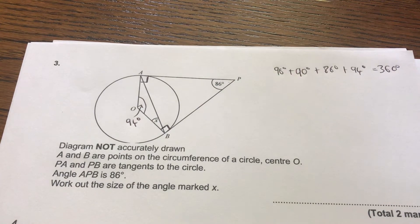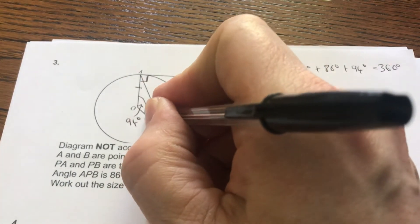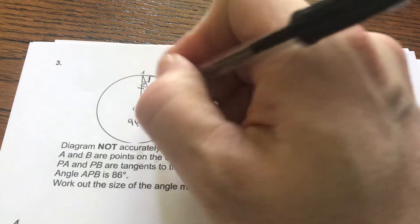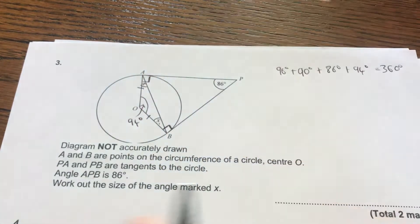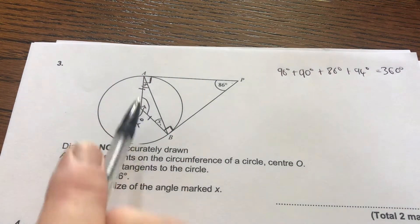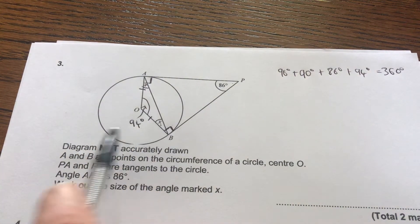And recognising an isosceles triangle is crucial. There you've got two angles the same, x and x. Because you often find triangles where they use the radius, they use the radius. Now the radii there are the same of course. So this is an isosceles triangle.